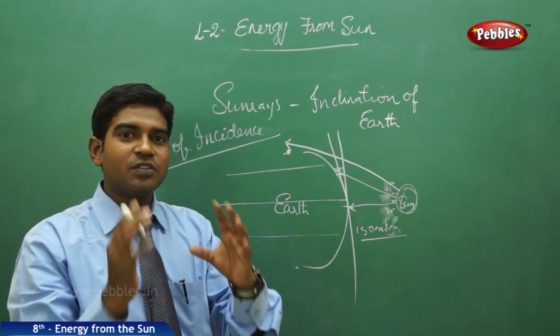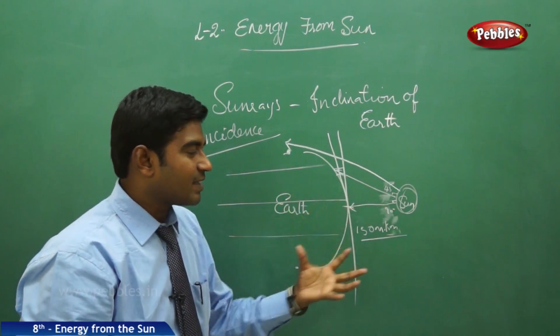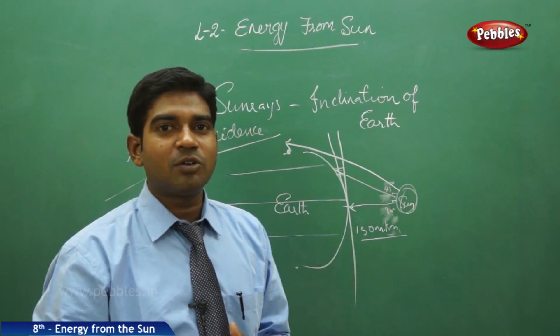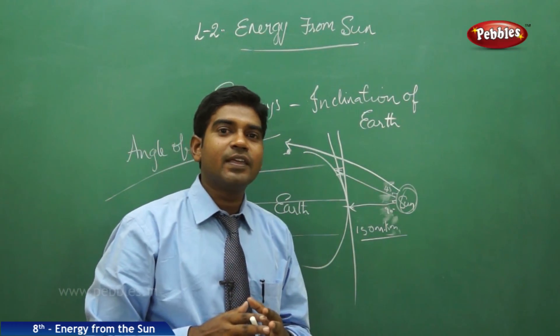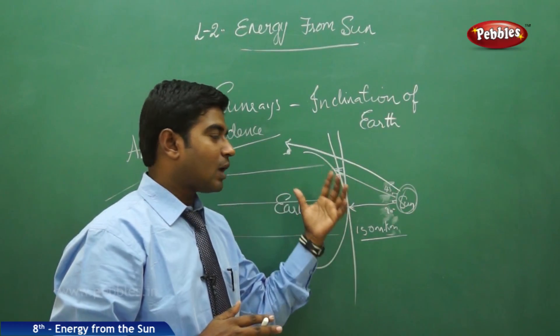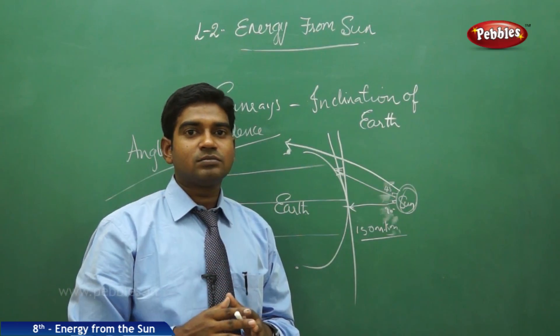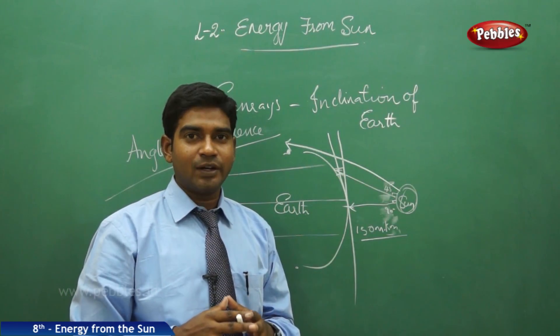If you understand the angle of incidence clearly, you can understand the reason why near the equator people are dark colored—we receive heavy amounts of sun rays directly near the equator. When it moves away from the equator, you get the connectivity very less. What about the heat? We will discuss now.